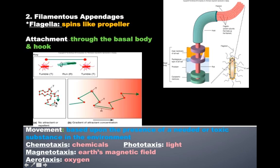This diagram depicts the tumble versus run pattern exhibited by bacteria. The difference between picture A and picture B is that there is a gradient towards some kind of attractant — maybe food or light in the environment. The movement bacteria exhibit can be in response to something needed by the cell, or it could be negative movement away from something toxic in the environment.